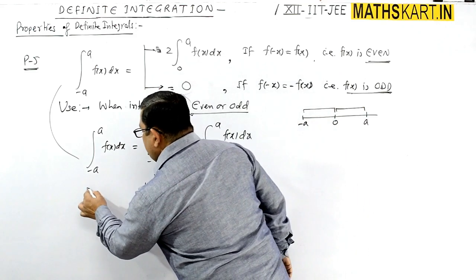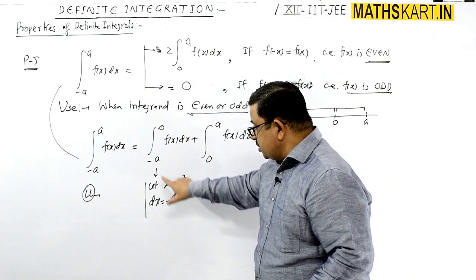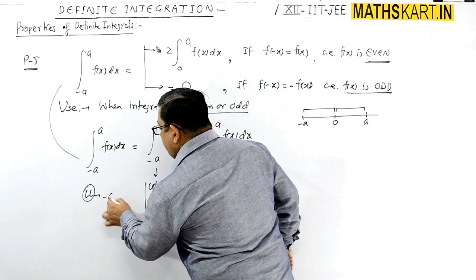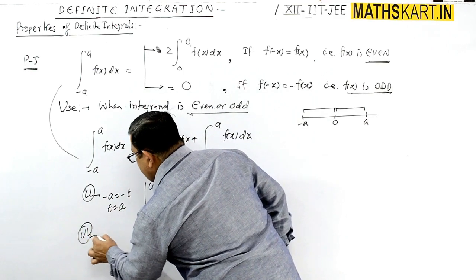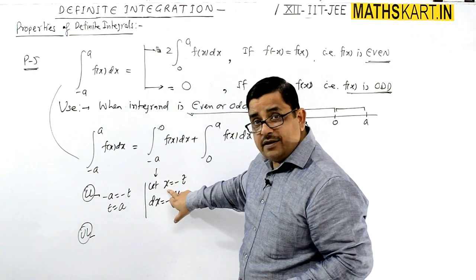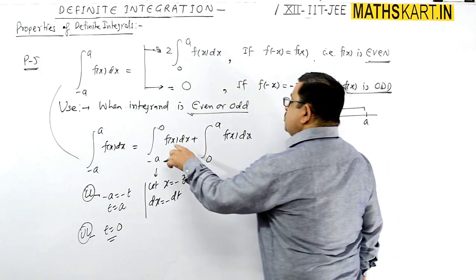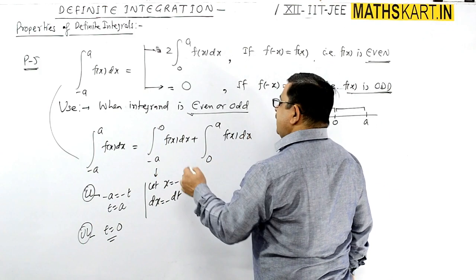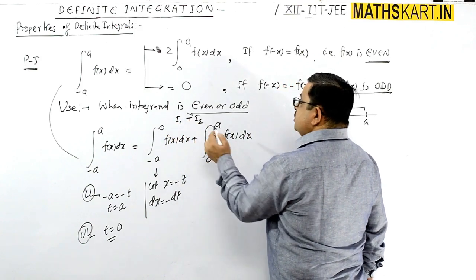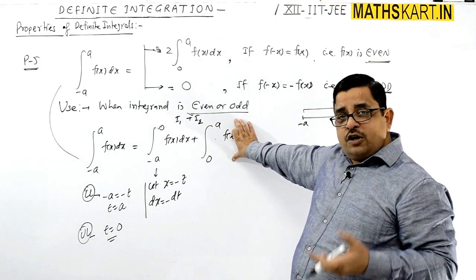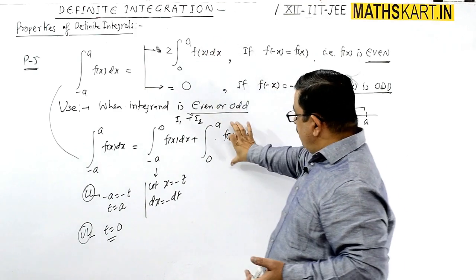We have to change the limits also. The lower limit will change and the upper limit will change. So t equals 0. Let's give this portion a new name — this is I1, and this is plus I2. I2 is this one. There is no need to solve I2 because it is already in the required format. So we will solve the I1 part.